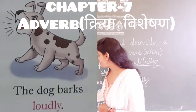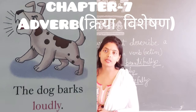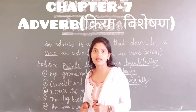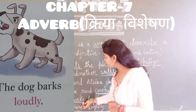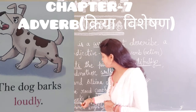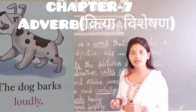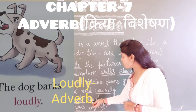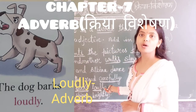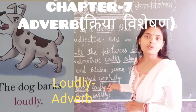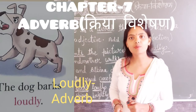Next example: The dog barks loudly. What is the dog doing? The dog is barking. Dog barks — and how is the dog barking? Loudly. The action verb is bark, and loudly is the adverb describing how the dog barks.